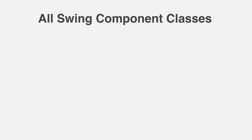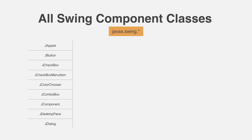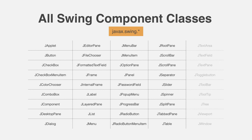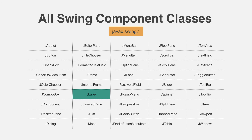All of Swing's components are represented by classes defined within the package javax.swing. The following table shows the class names for Swing components, including those used as containers. Notice that all component classes begin with the letter J — for example, the class for a label is JLabel, and the class for a push button is JButton.